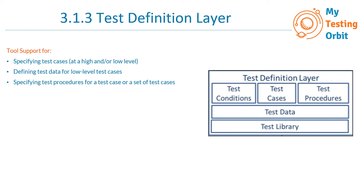The next one is specifying test procedures for a test case or a set of test cases. This means that test cases have a sequence — the order in which they need to be executed — or there might be preconditions associated with that test case. This defines how to select and run a test case or a set of test cases. Regarding test scripts for the execution of test cases: a test case includes preconditions, inputs, different actions, and expected results, while a test script is a sequence of instructions for the execution of that test case.